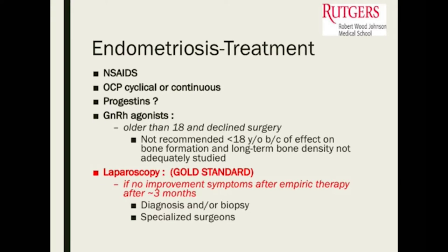Sometimes we put them on birth control pills to help quiet down all the endometriotic tissue. Sometimes we use progestin-only options. GnRH agonists are not really recommended under the age of 18 because of bone density concerns, so we don't routinely use Lupron under 18 — though in older patients with endometriosis there are indications for it.